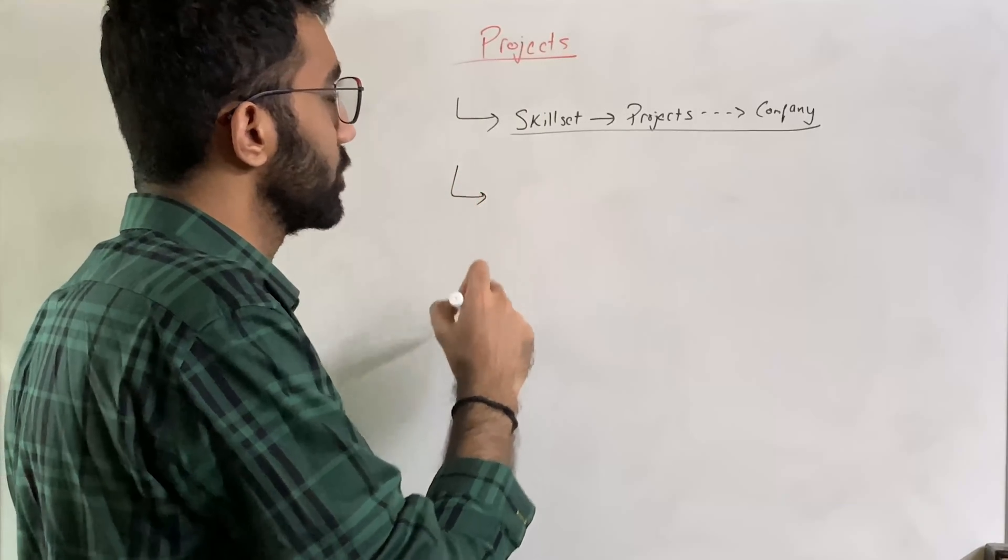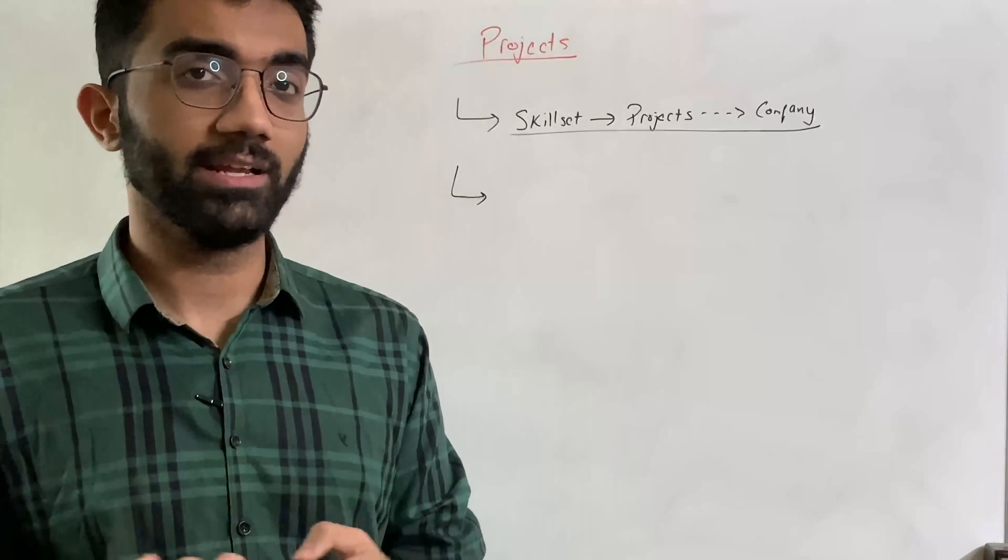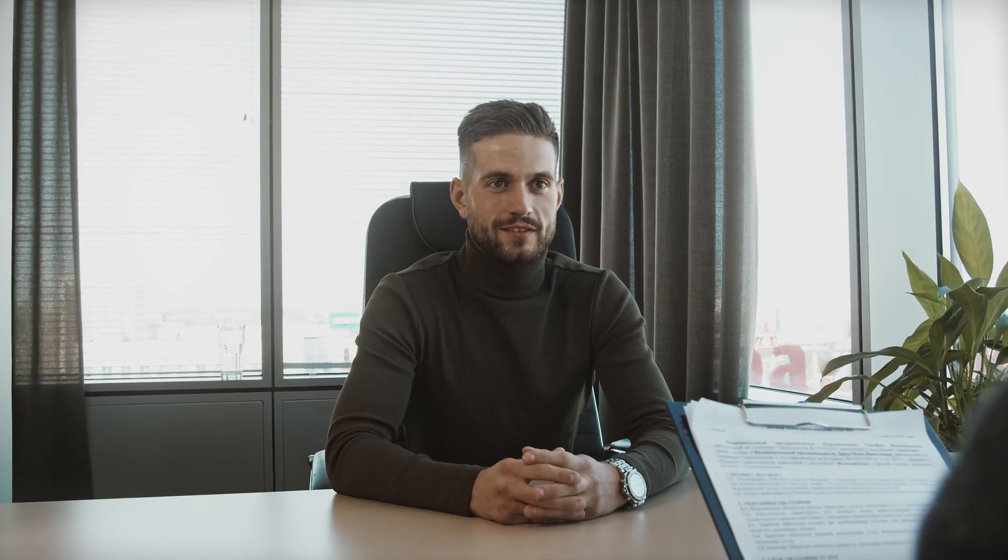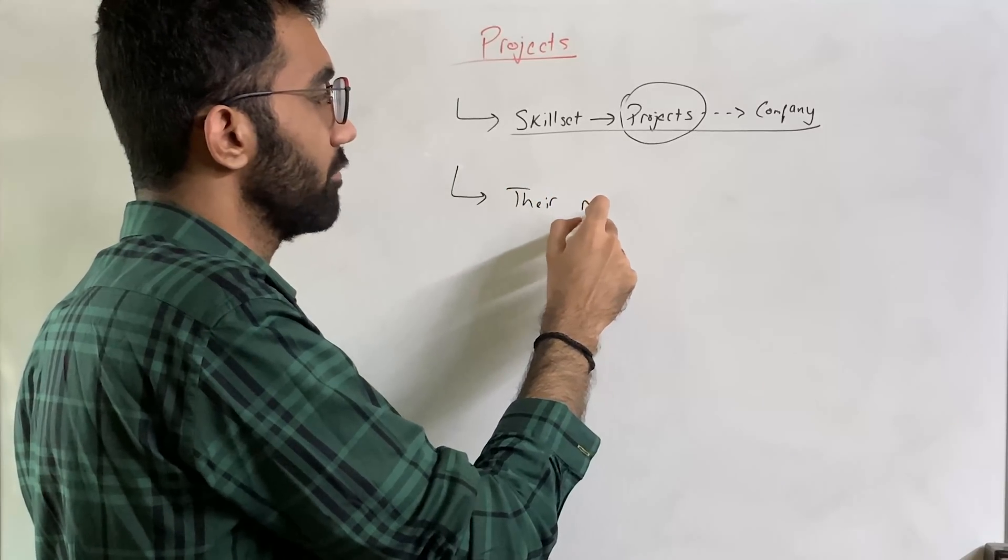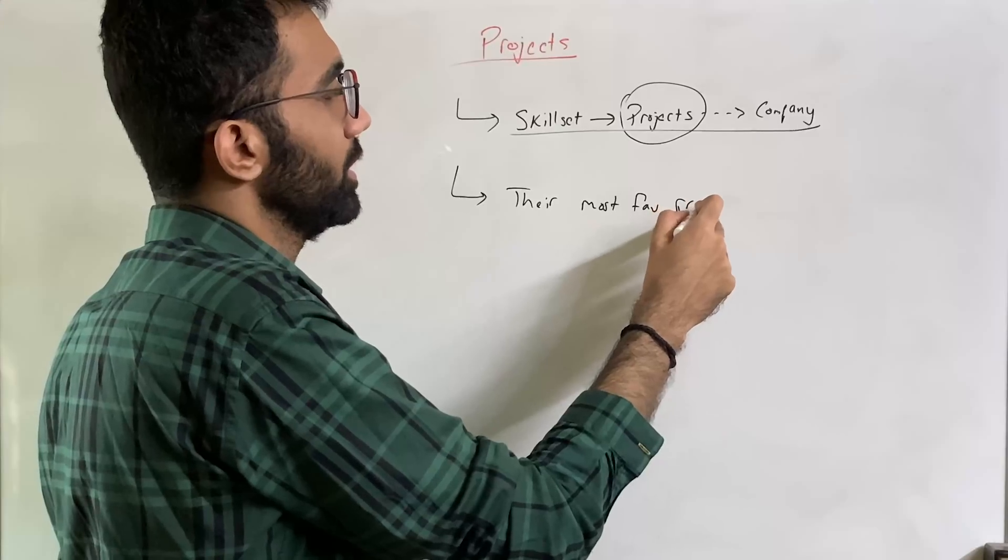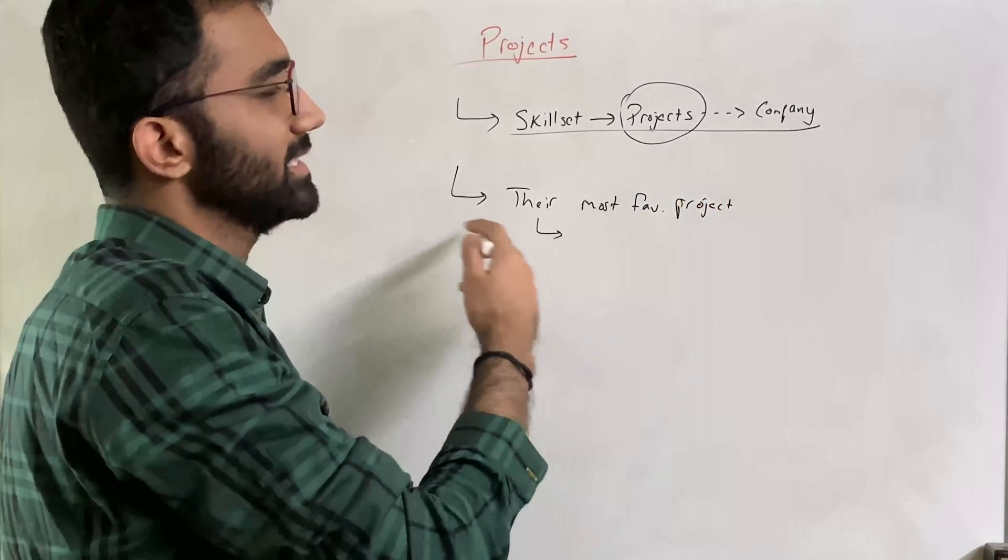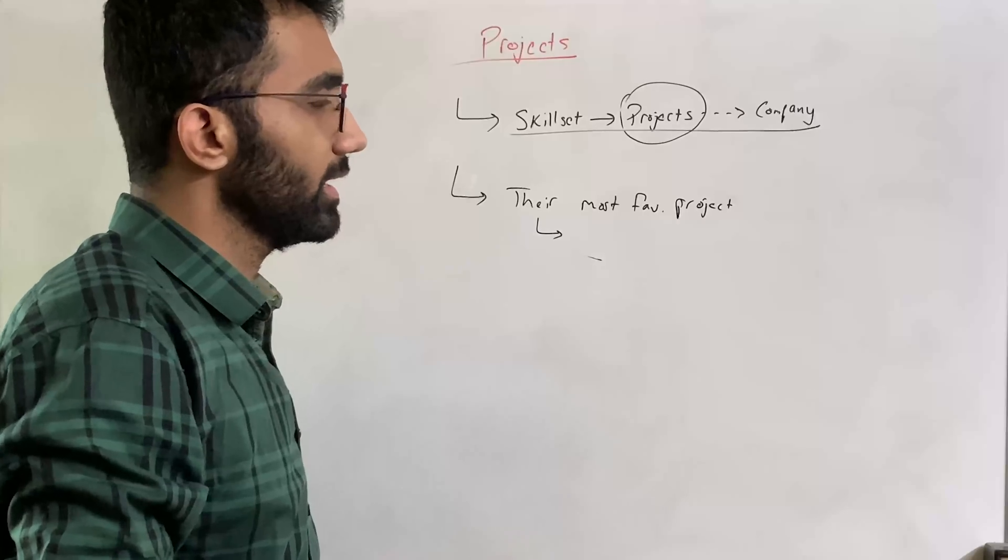Alright, the second thing which I do as one of the rounds, which I really like to do is out of all the projects which a particular person have mentioned, I would say pick one project of their choice, their most favorite project, which could be on a number of criteria. Basically, this is a decision which they would have to take.